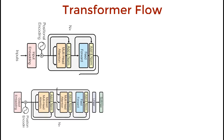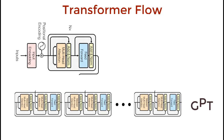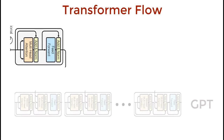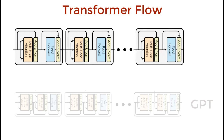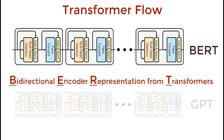If we stack the decoders, we get the GPT transformer architecture. Conversely, if we stack just the encoders, we get BERT — a Bidirectional Encoder Representation from Transformer — which is exactly what it is.